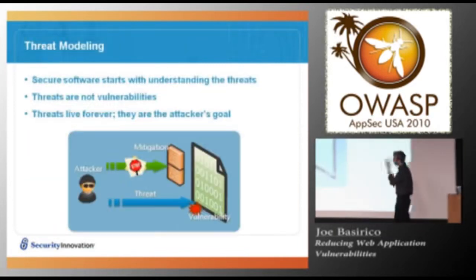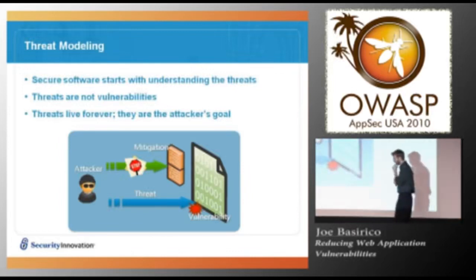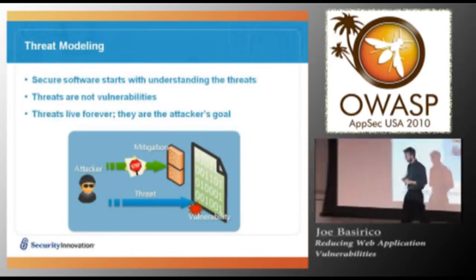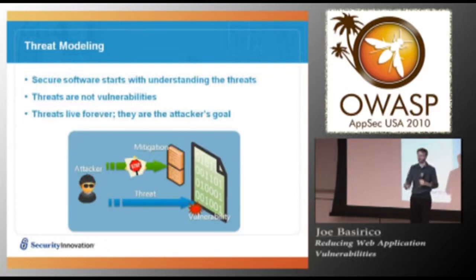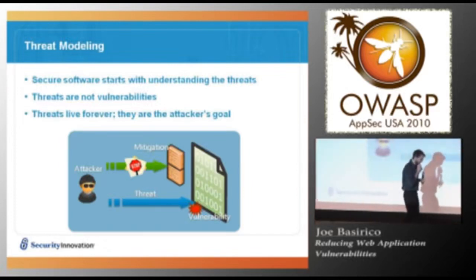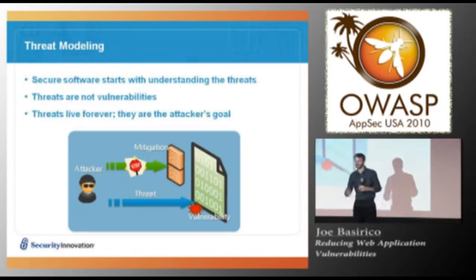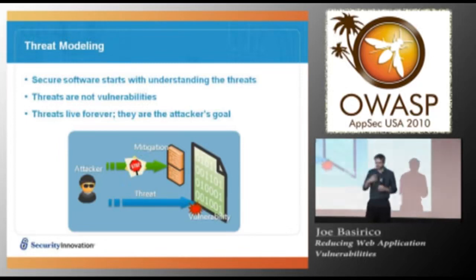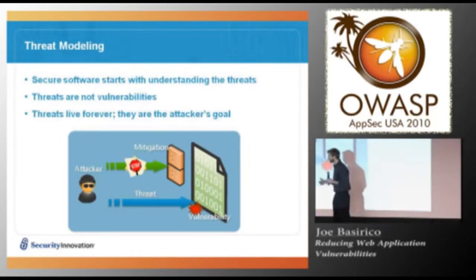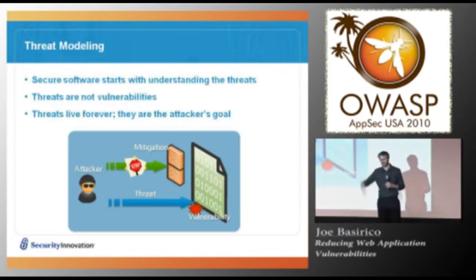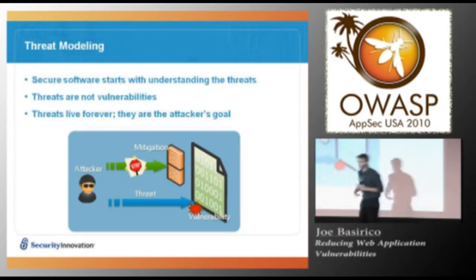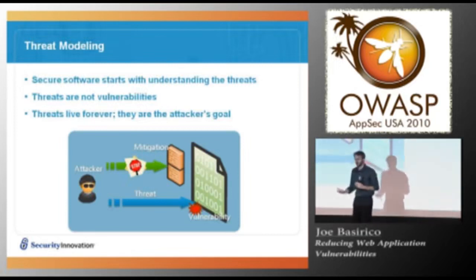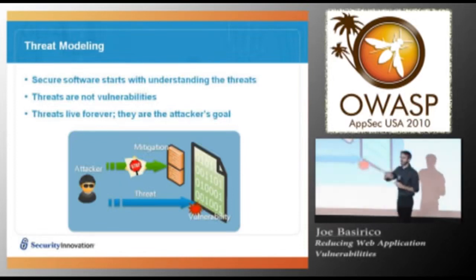Threats are not the same as vulnerabilities. I made an analogy: I'm holding a hot coffee and the threat is that I'm going to throw it on you — I'm the attacker, and you're vulnerable because you're not wearing a hot-coffee-protective suit. You have the vulnerability of not wearing the suit; if you had the suit, you'd have mitigated that threat. So even if I attack you with my coffee, the issue isn't realized. Threats are always there — it's up to you to wear your protective suit, and if you don't, I throw coffee on you and I exploit that vulnerability.